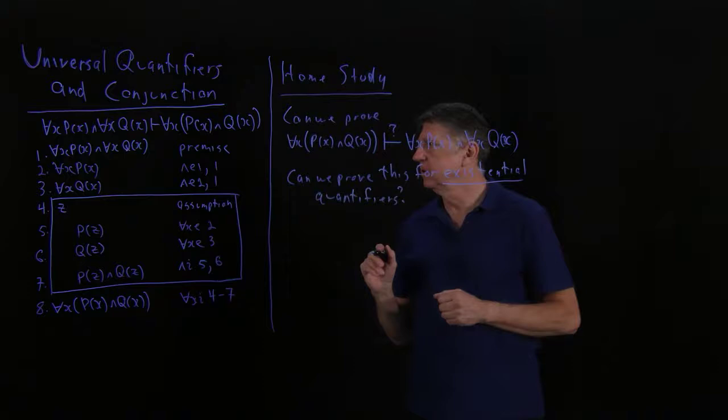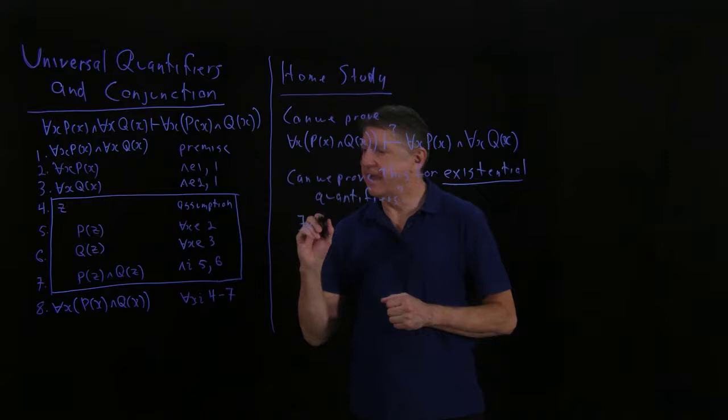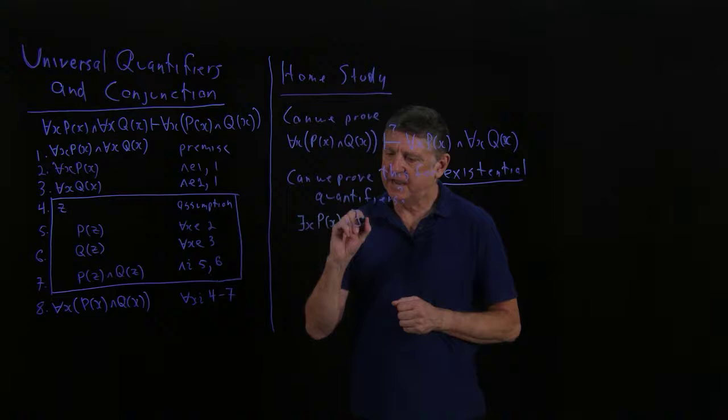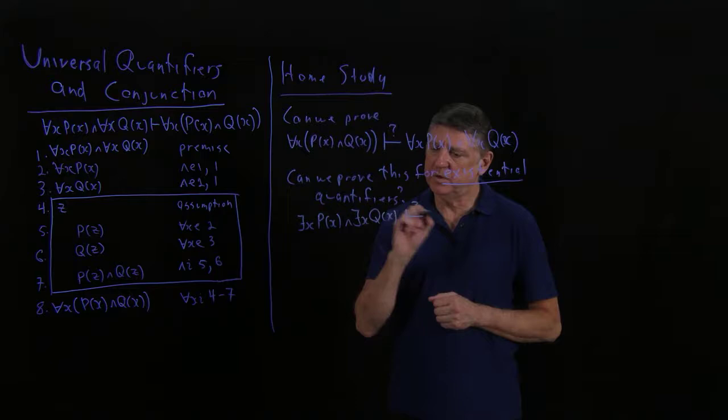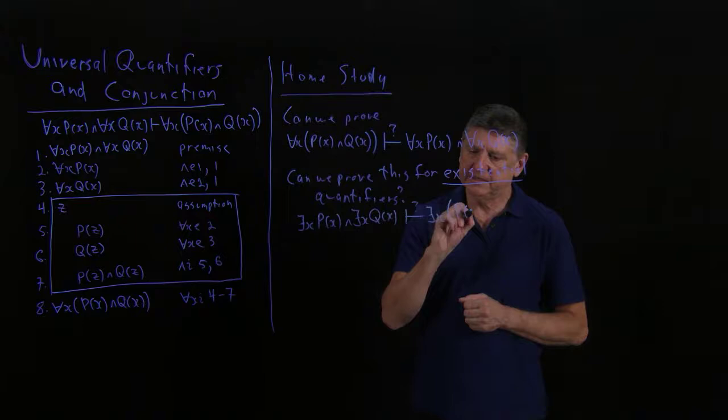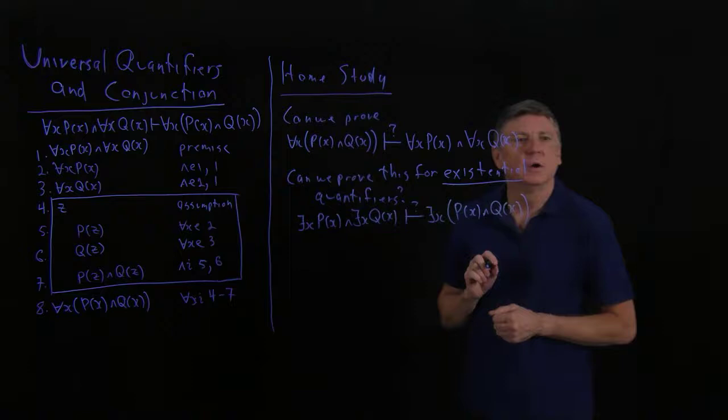That is, can we prove that if something has the property P and something has the property Q, can we prove that something has properties P and Q?